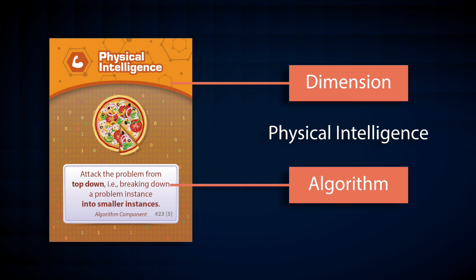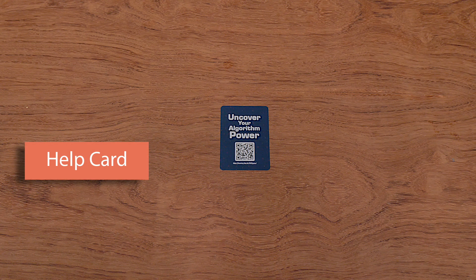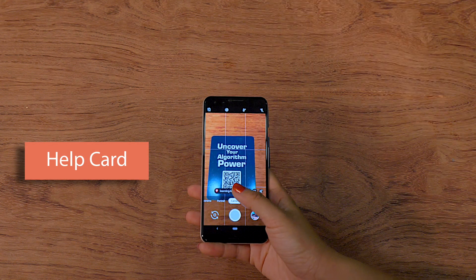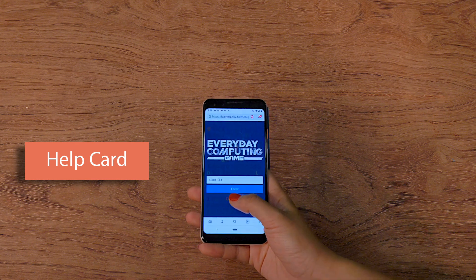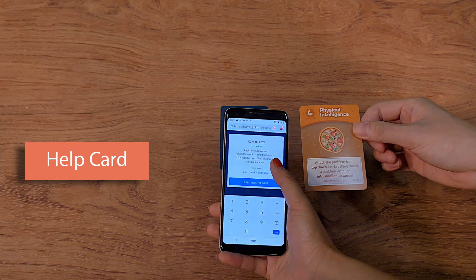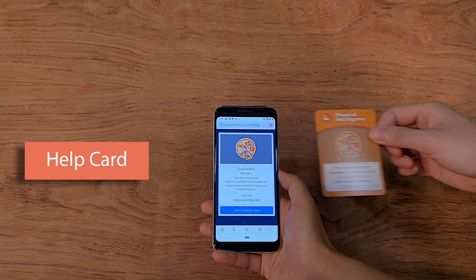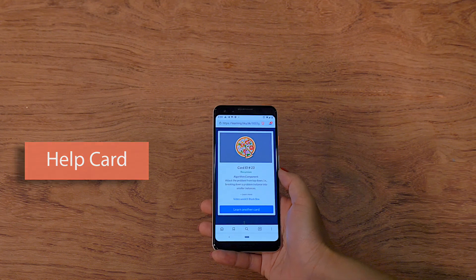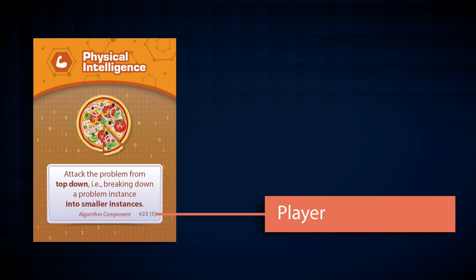The description represents the algorithm of the card, which you will need to interpret using the knowledge you have learned in the course. For example, based on the content, we know that it's a recursion card. If you cannot figure out which algorithm it is, don't worry. You can always find the help card and scan the code, which will take you to the help page. Enter the card number at the bottom right corner to check which algorithm the card belongs to. The number in the bracket is the player index number — for example, index five means the card is available for a five-player game.